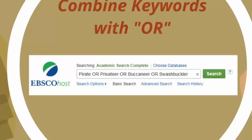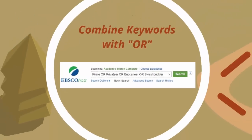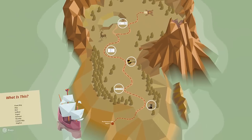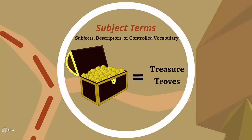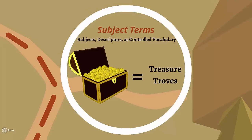Sometimes it can be hard to think of different keywords, so let the database help by using its subject terms. Subject terms — sometimes called subjects, descriptors, or controlled vocabulary — are the words and phrases that the database has selected to represent specific concepts and are assigned to each resource to help describe it accurately.